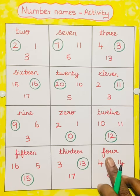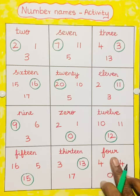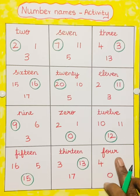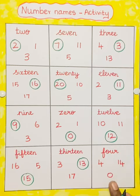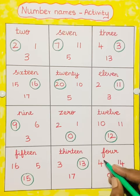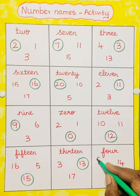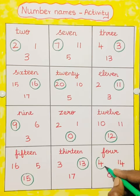14. 4. F-O-U-R. 4. 14. 0. So we have to circle the number 4.